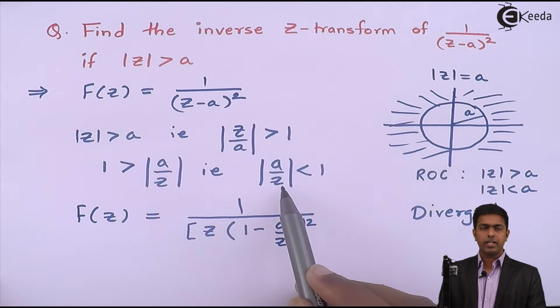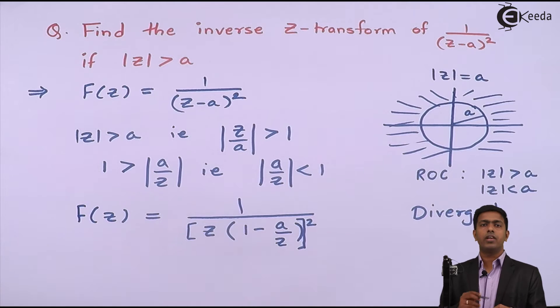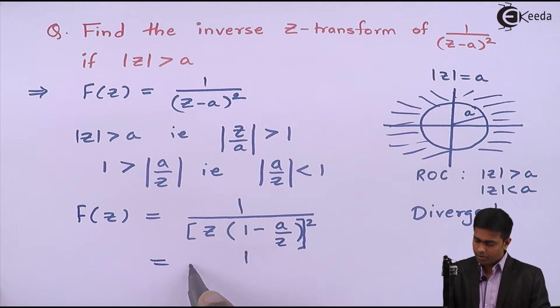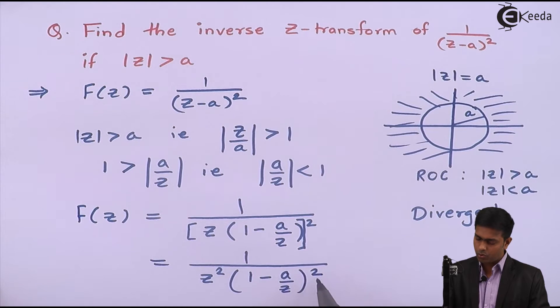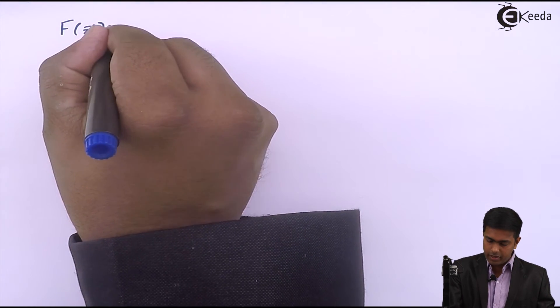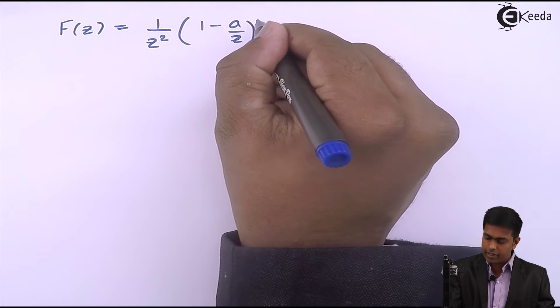Therefore, since mod A by Z is less than 1, we will never get a divergent series. This function becomes 1 upon Z squared into (1 minus A upon Z) the whole square. Taking (1 minus A by Z) the whole square to the numerator, we get F of Z equal to 1 upon Z squared times (1 minus A by Z) raised to minus 2.